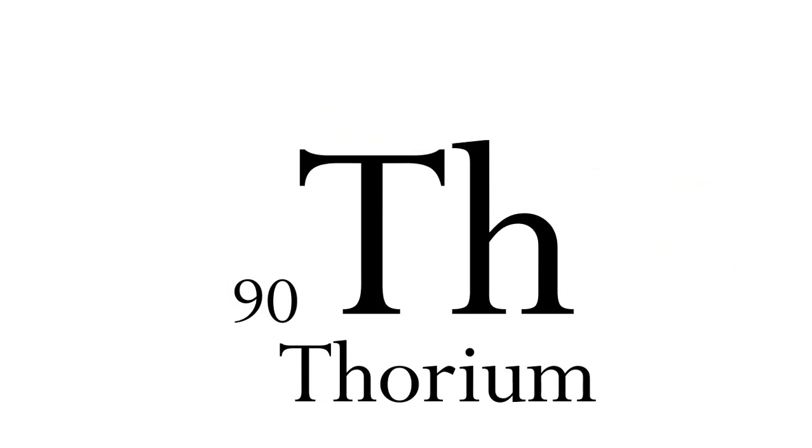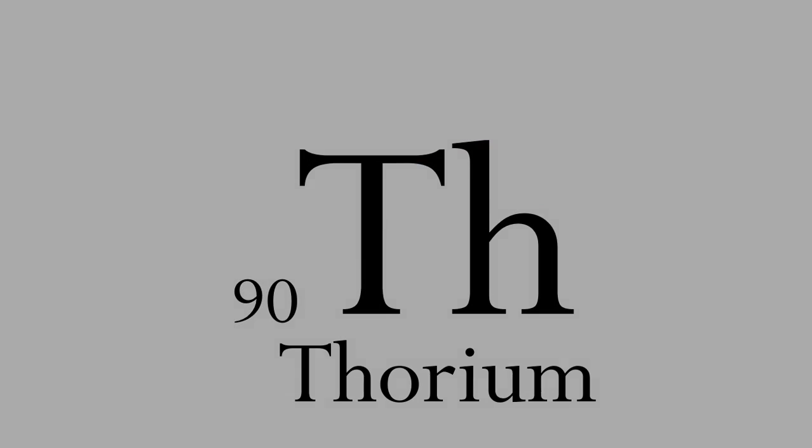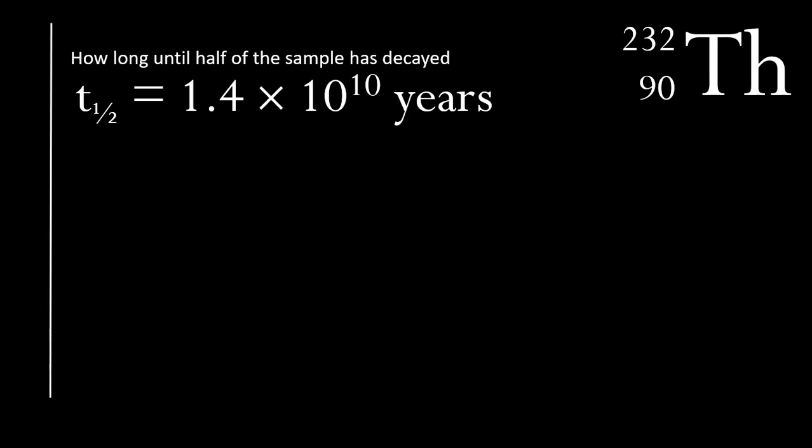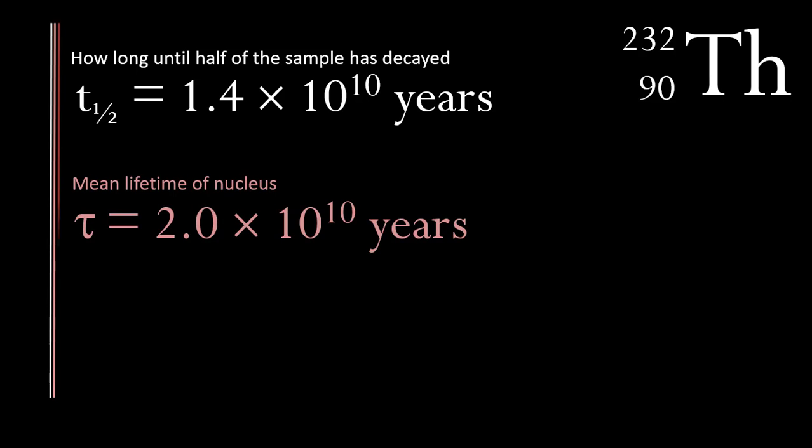Ninety is Thorium. This is a primordial element. Almost all Thorium is Thorium-232, which has a half-life of about 10 to the power 10 years, and that is not far off the age of the solar system.